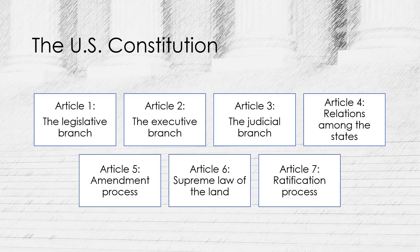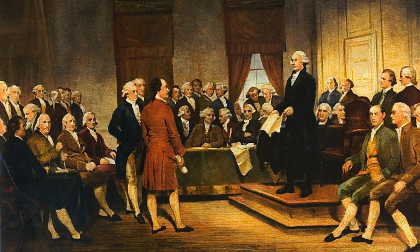The remaining articles cover topics such as the relationship between the states and federal government, the process for amending the Constitution, and the supremacy of federal law. The seven Articles of the U.S. Constitution were written by the Founding Fathers of the United States during the first Constitutional Convention held in 1787 in Philadelphia, Pennsylvania.